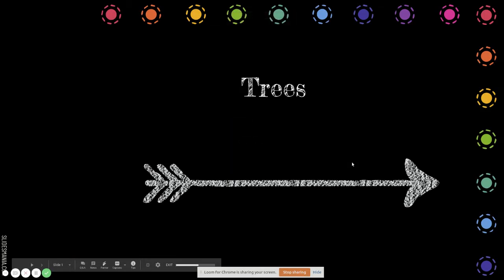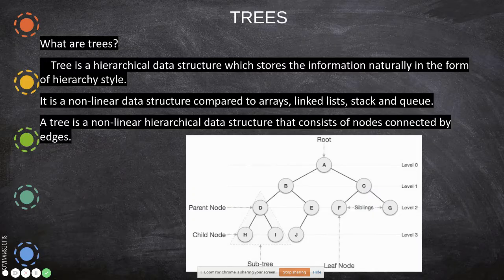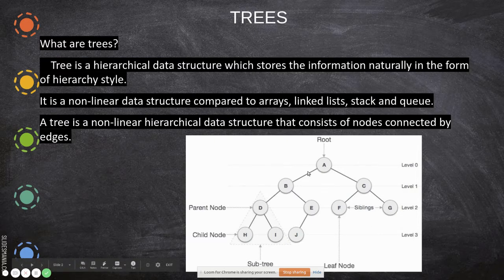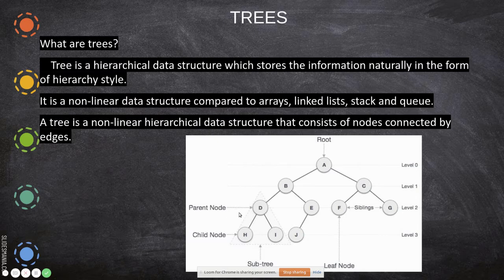In this video we are going to see about the trees data structure. A tree is a hierarchical data structure. This is an example of a tree where it is hierarchical — this is the topmost level, next level is these two, then next level is this. That is why it is called a hierarchical structure, and this stores information here — we store information A, B, C and so on.